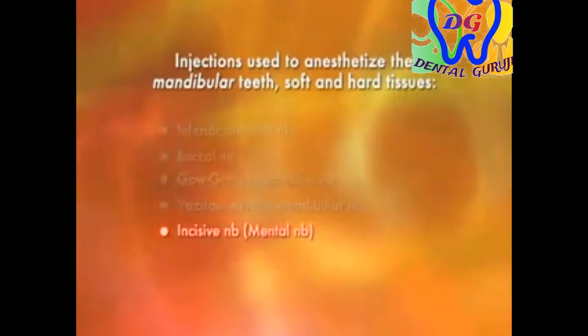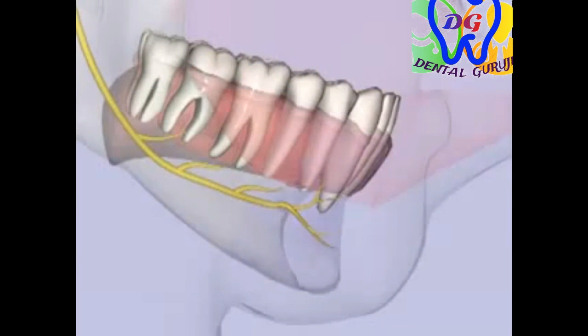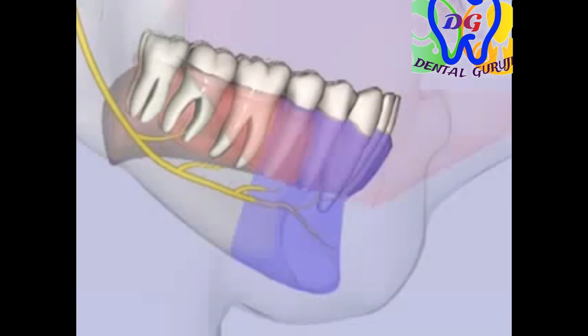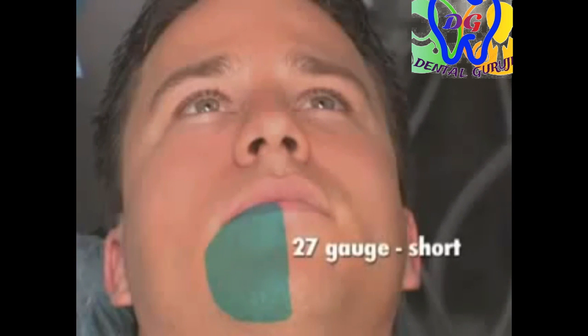The incisive nerve block provides pulpal anesthesia to the 5 mandibular anterior teeth — the incisors, canine, and 2 premolars — the buccal soft tissue and bone anterior to the mental foramen, and the skin of the lower lip and the chin. A 27-gauge short needle is recommended.